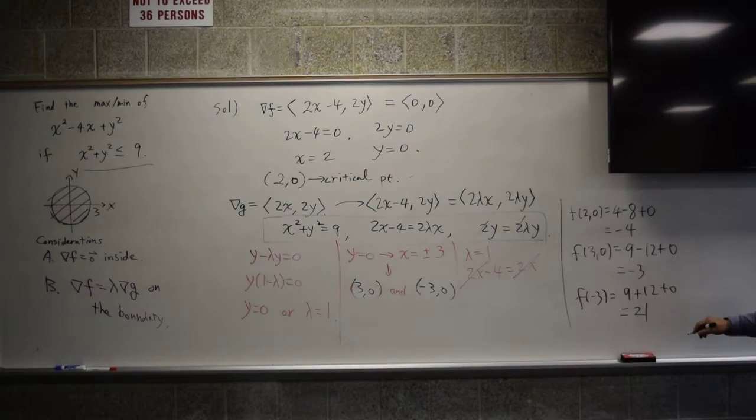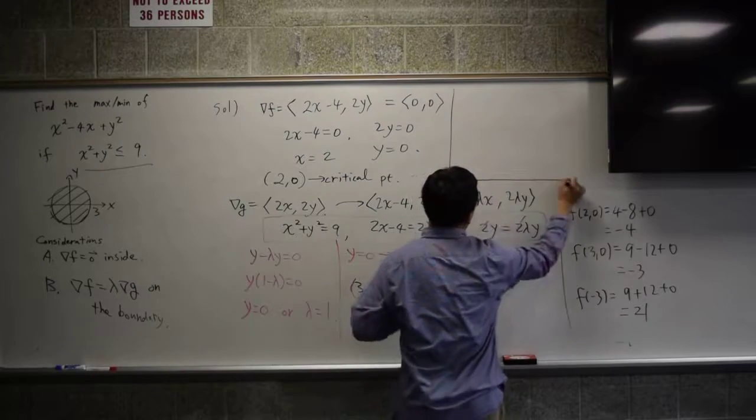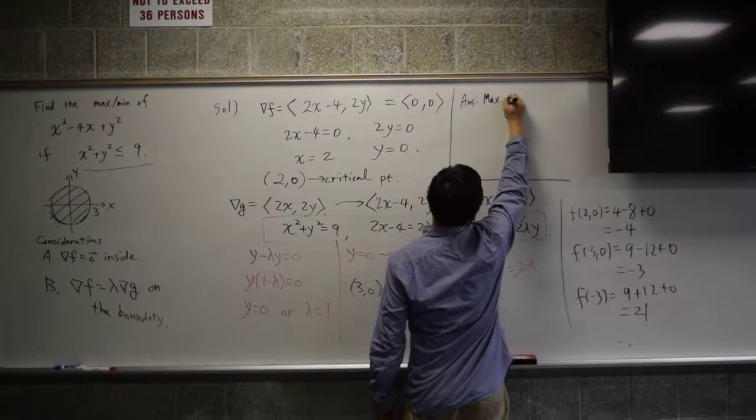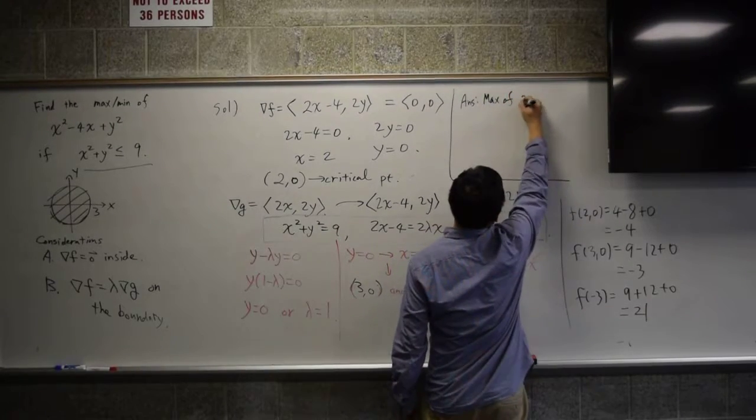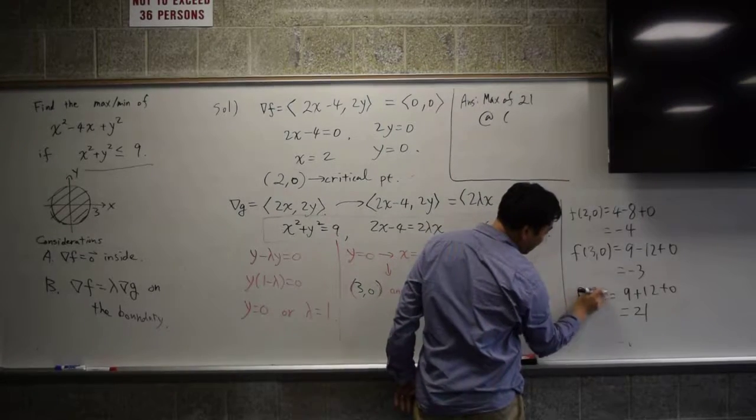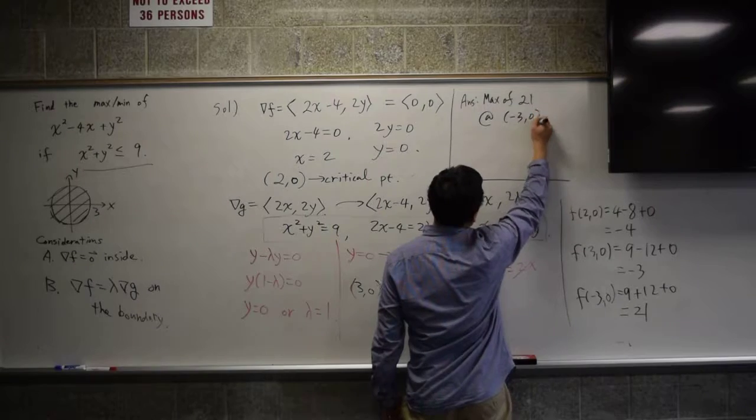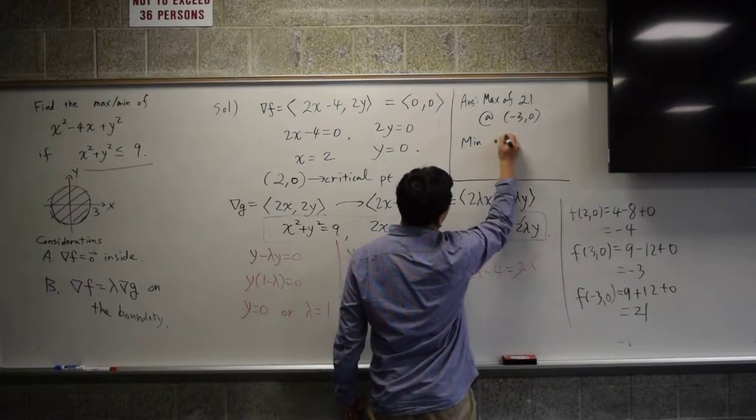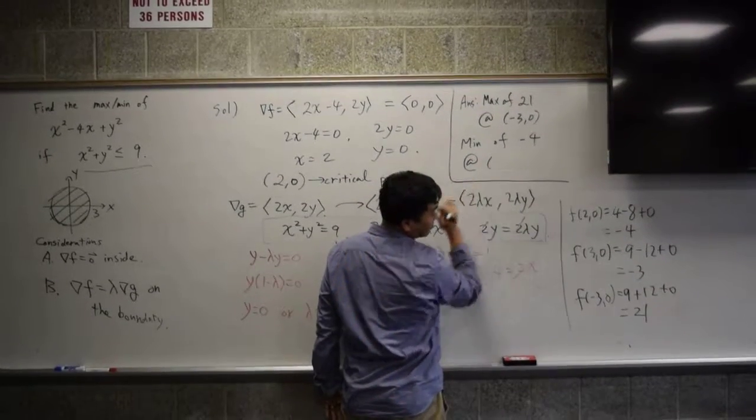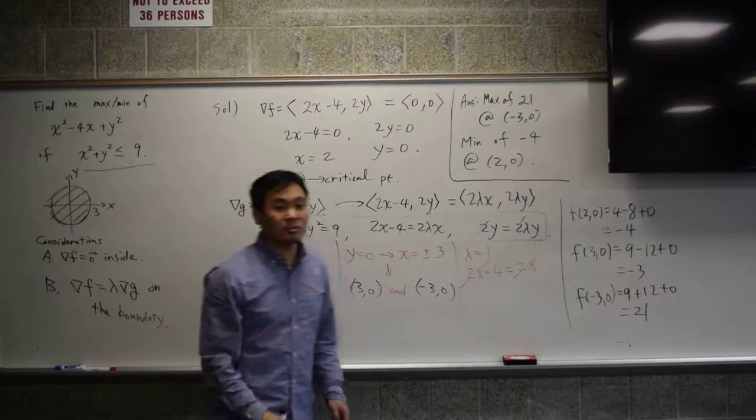So what's the max? At (-3, 0). Let me write the answer here. Answer: max of 21 at (-3, 0). And minimum of negative 4 at where? (2, 0). So that's the answer.